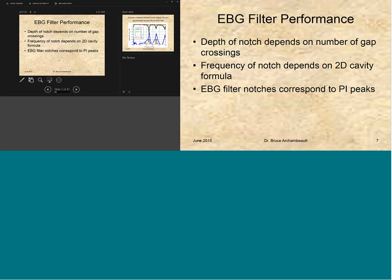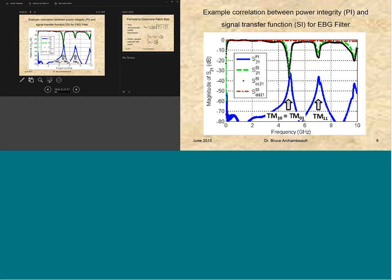The performance is going to depend on the number of gap crossings, and the frequency of the notch that we're going to get depends on the 2D cavity formula created by that patch and the ground plane below it. And what's nice about this is that we can calculate this with using power integrity tools or just actually two simple, rather simple 2D cavity resonance formulas, and that's going to correspond to where the notches are. And so we look here, we see the blue line is basically the power integrity that if I was to do this 2D cross-section analysis, I can see where the peaks are going to be, and you can see they line up with the notches above.